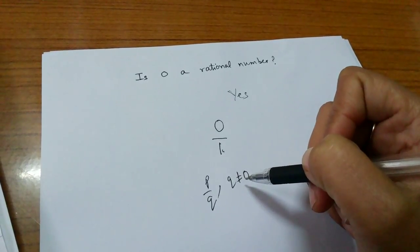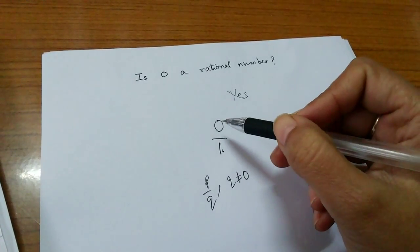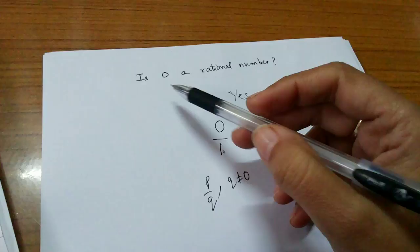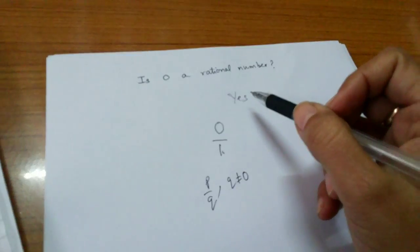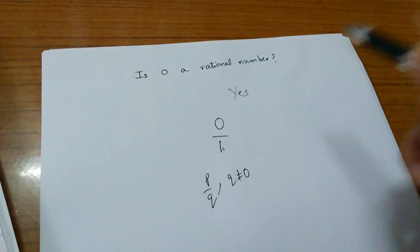So, we can say that 0 is a rational number.